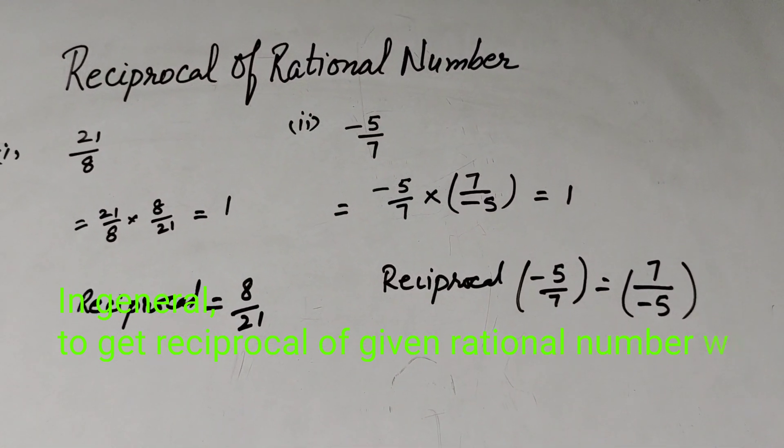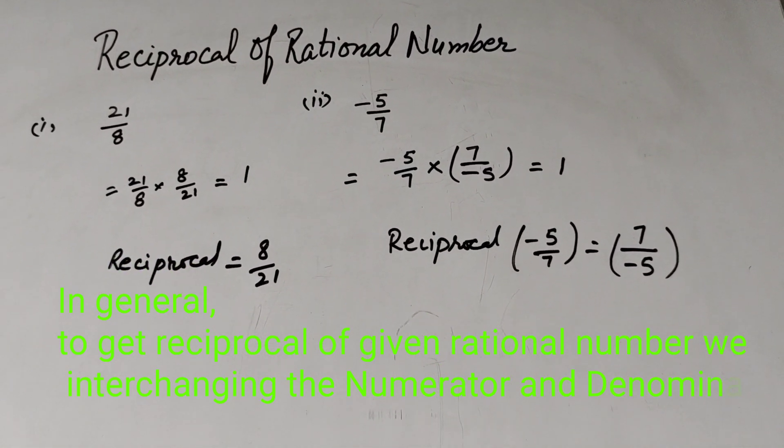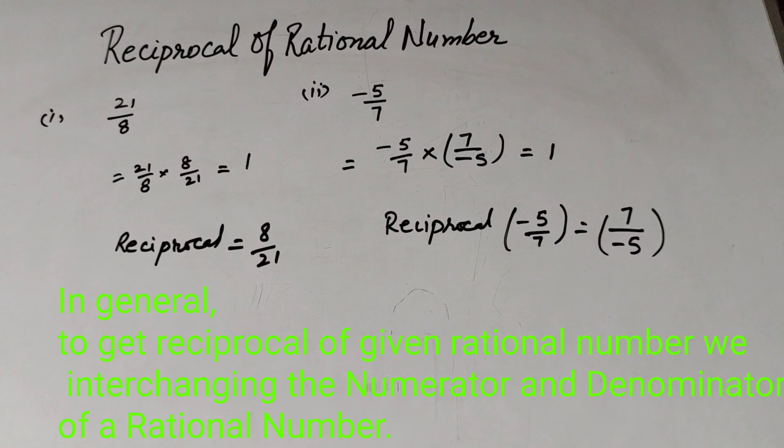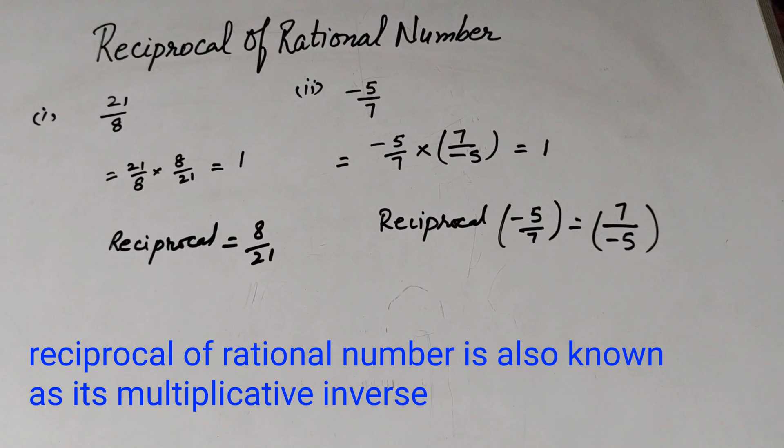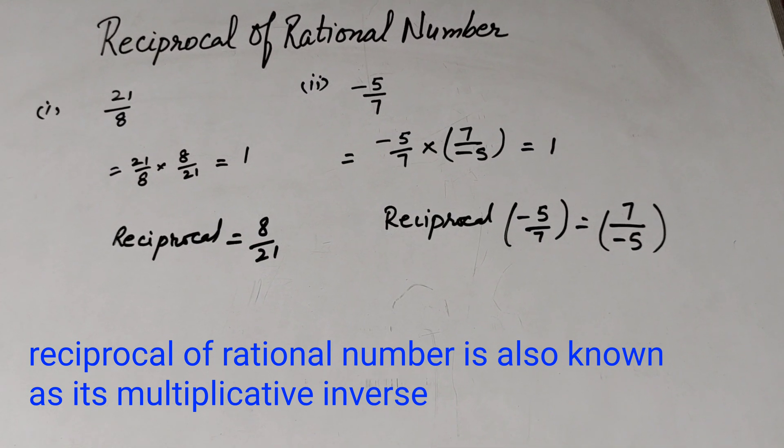So in general, to get the reciprocal of given rational number, we interchange numerator and denominator of rational number. So the reciprocal of rational number is also known as its multiplicative inverse.